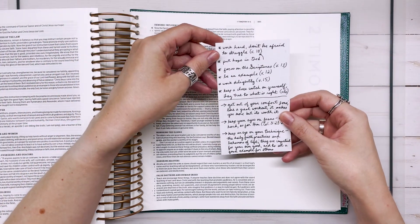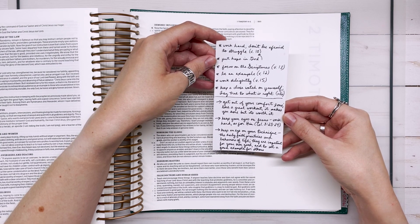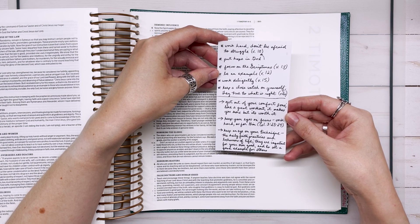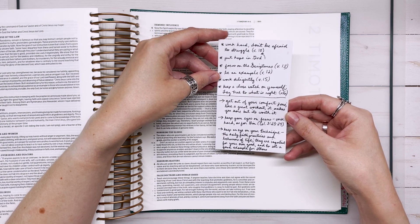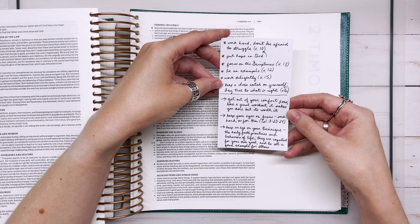So I made this list of points, some of the things that Paul said, such as work hard, don't be afraid to struggle, be an example to others, and work diligently, and keep a close watch on yourself, stay true to what is right.